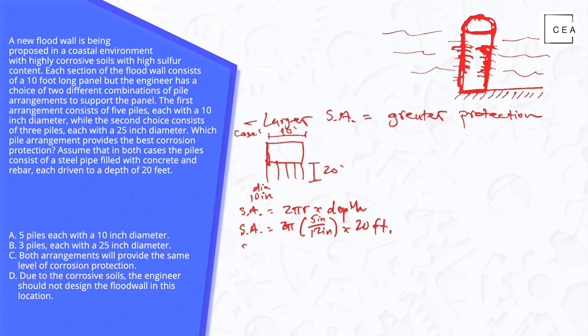The surface area of one column calculates out, we get that to be 52.359 feet squared. That's one column, one pile.